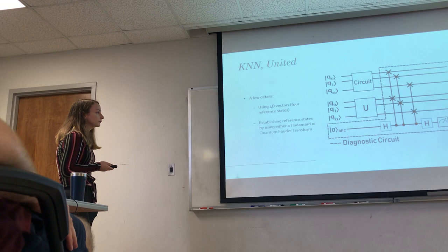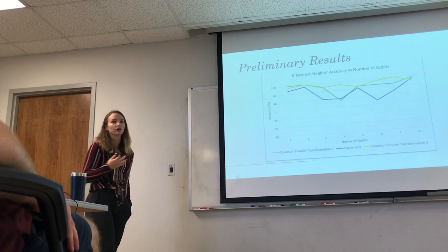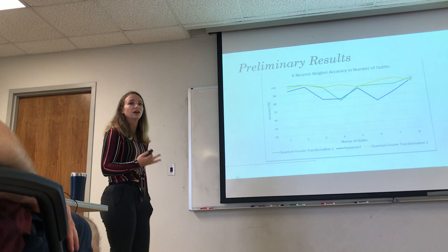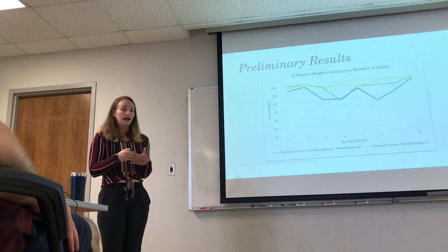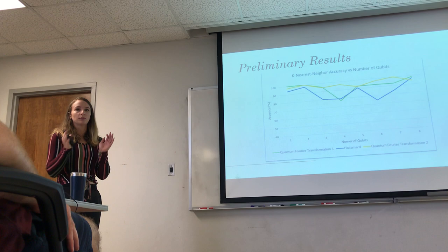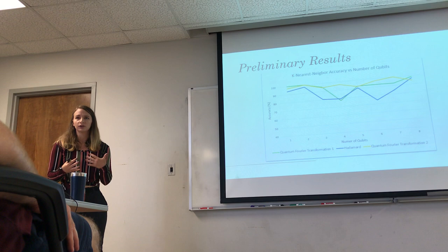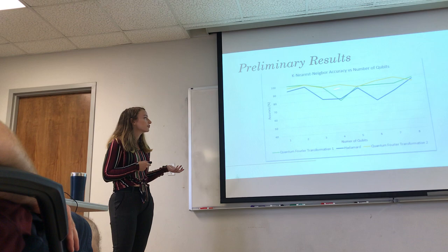Preliminary results — and I should caveat that this is the very beginning of the project, so we need much more data to smooth out these lines. One thing we're looking for is stability of the reference state: at a certain number of qubits, does the accuracy scale reasonably? You can see very quickly that Hadamard is not a very stable reference state. But with just a slight switch to the QFT, depending on the input states, you get an accuracy that is much more stable above 90%. Above 90% is the goal with machine learning — better than a human.